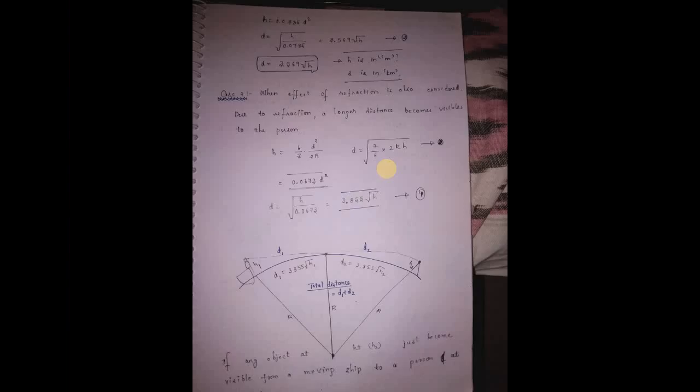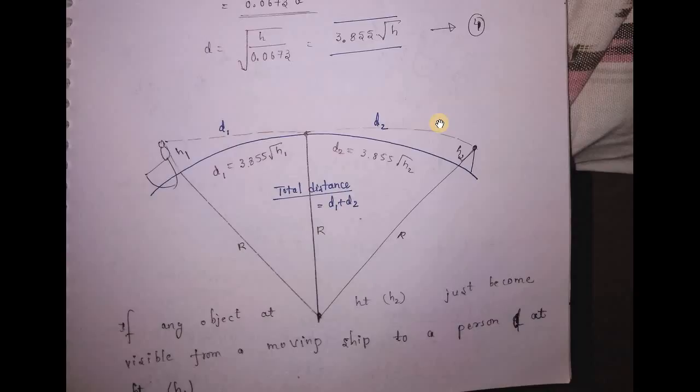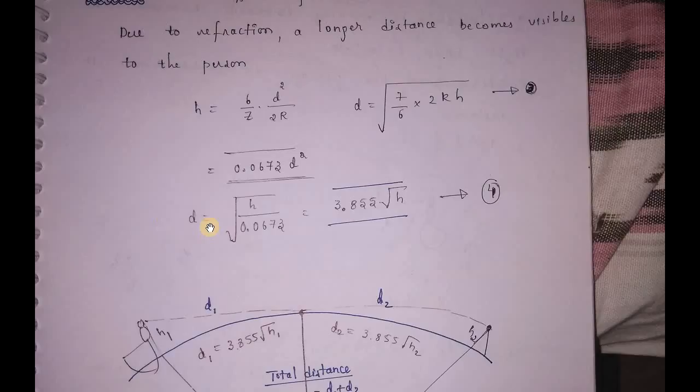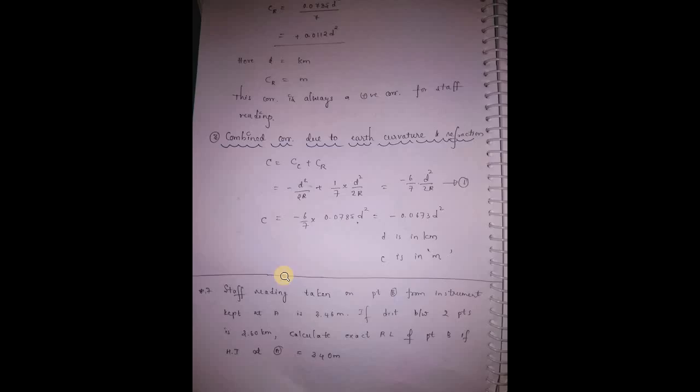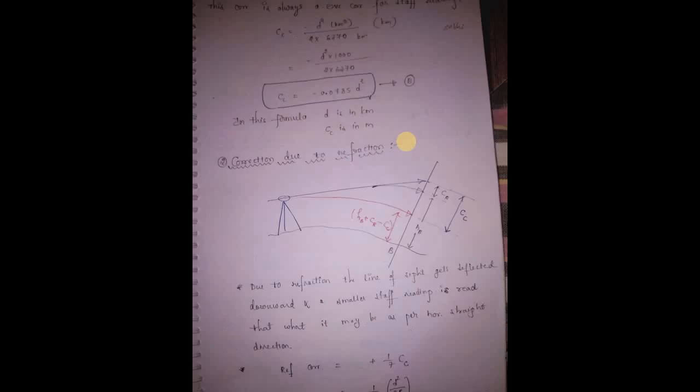The combined correction formula gives 0.0673 into D squared equals H. Therefore D equals the square root of H divided by 0.0673. This is the standard formula used for combined curvature and refraction correction calculations.